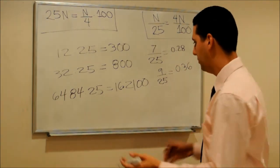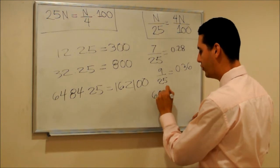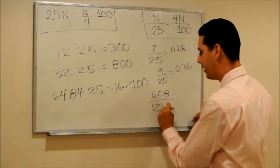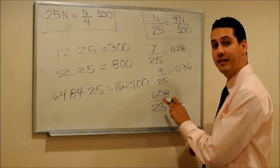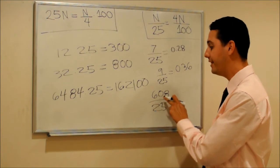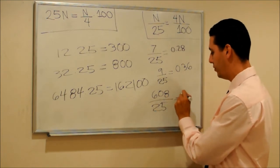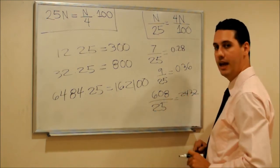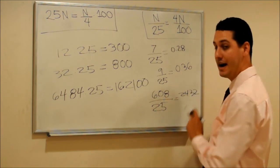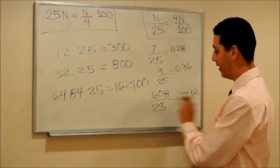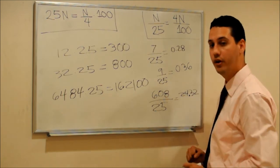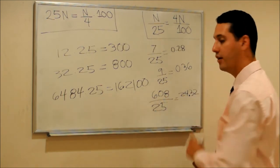What is 608 divided by 25? Let's multiply 608 by 4 — the answer is 2432. But for the final answer, we have to divide by 100, which means we place the decimal right here. So the answer would be 24.32.